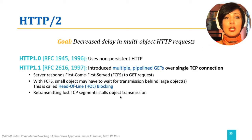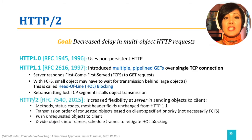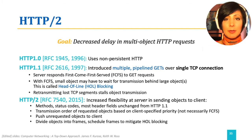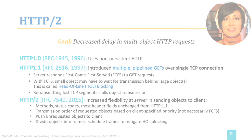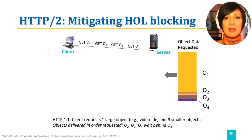HTTP 2, which is the new version introduced in 2015 and gaining popularity fast, solves this problem by changing the first-come-first-served response order and dividing objects into frames and scheduling the frames instead. Let's examine head-of-line blocking through an example.